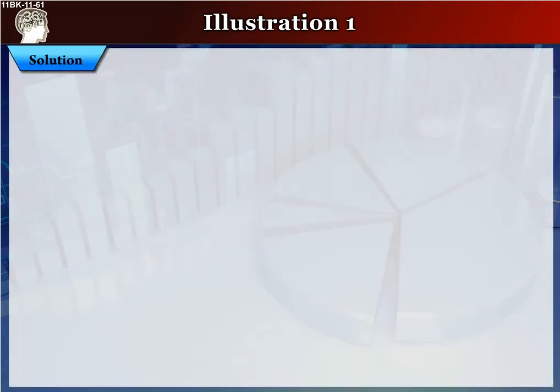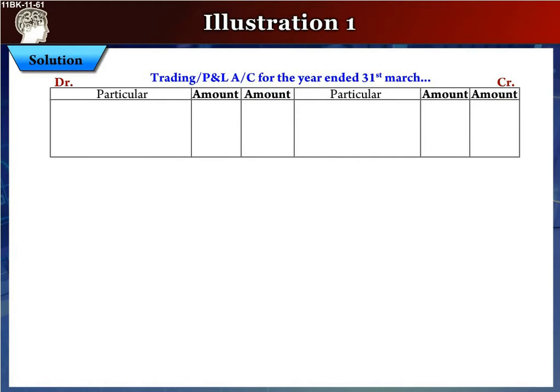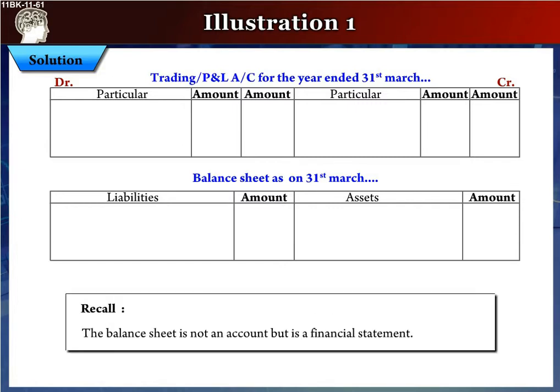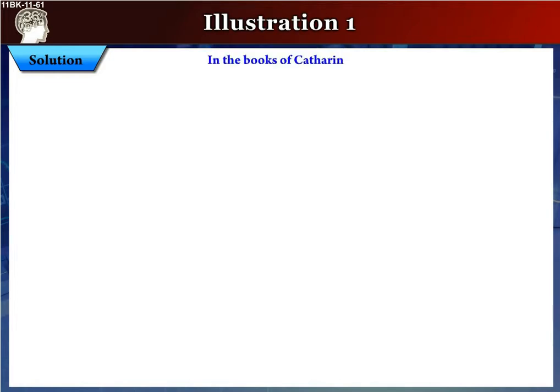By solving the sum of final accounts, we will always make a trading and profit and loss account and a balance sheet. Students, as you may recall, the balance sheet is not an account but is a financial statement. First, we shall make the trading and profit and loss account. On top of this account, we write in the books of Catherine, and below that, trading and profit and loss account for the year ended 31st March 2011.